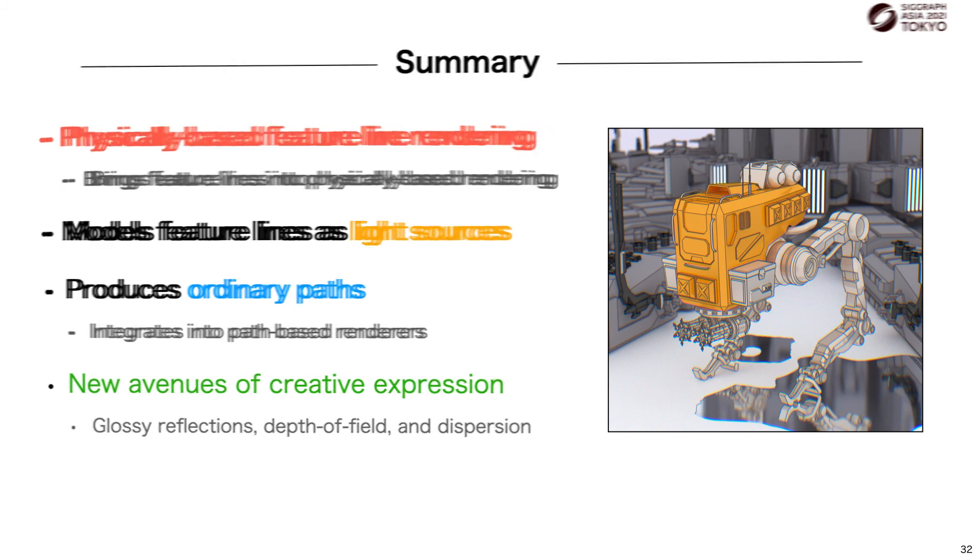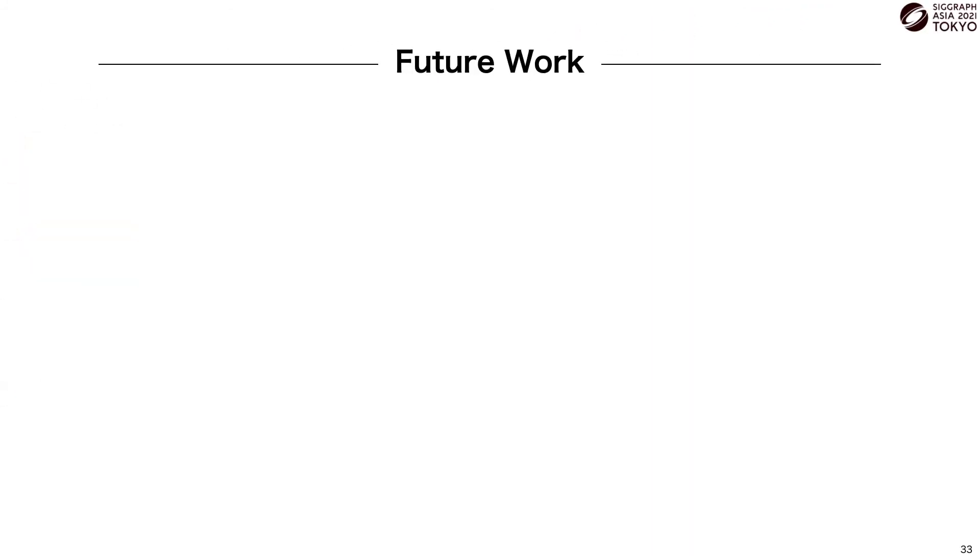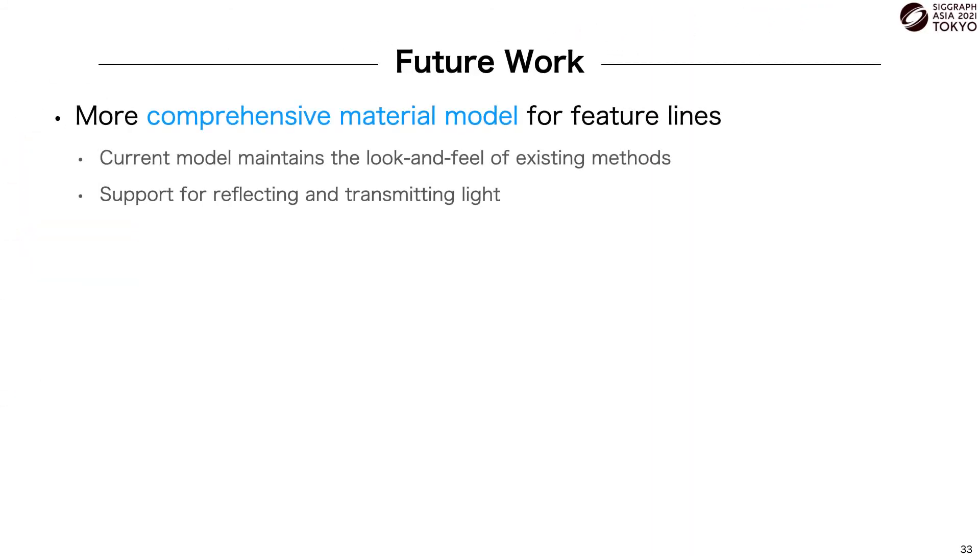Our proposed method treats feature lines as light sources that absorb all incoming light. This maintains the look and feel of existing line rendering methods, but lacks the ability to render lines that reflect or transmit light. A more comprehensive material model for feature lines would provide even further means for creative expression.